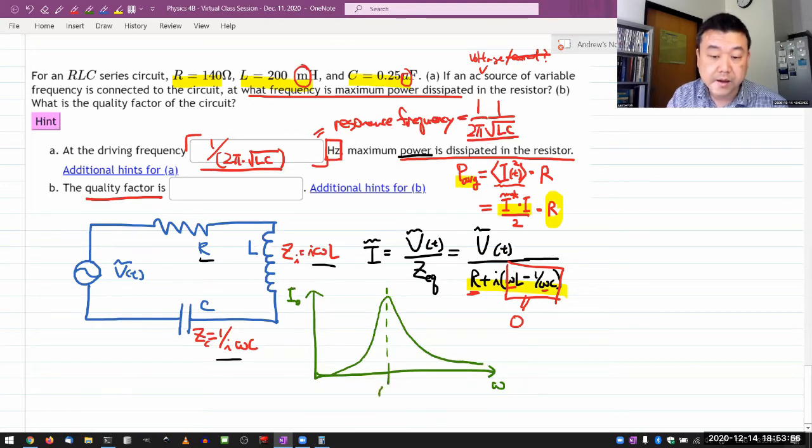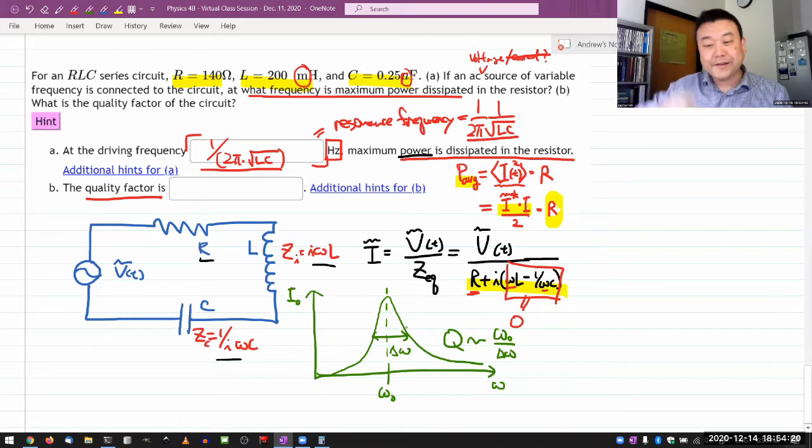This is going to be my resonance frequency, and it's going to have some width. And quality factor, roughly speaking, can be described as the resonance frequency divided by the width, so that the narrower the width, the higher the quality factor. So that's kind of the rough idea behind the quality factor.